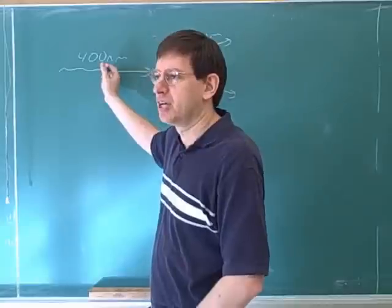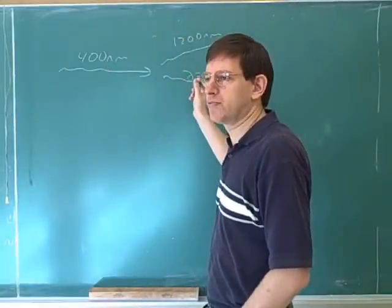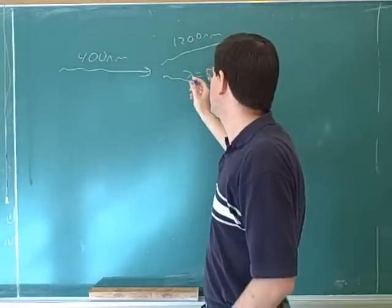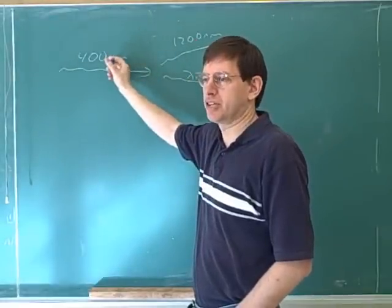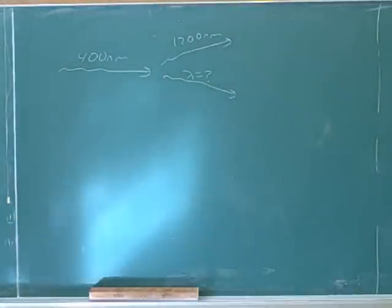So the point is we use conservation of energy. This photon has a certain amount of energy, and when it splits in two, that energy splits between these two photons. If you add the energy here to the energy here, you should get the original amount of energy. So could we do it now? Sure, let's do that.